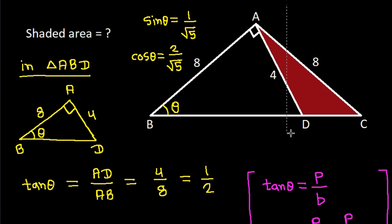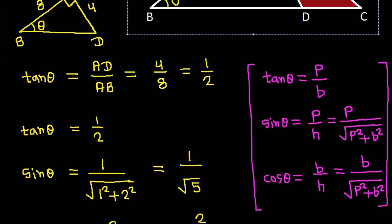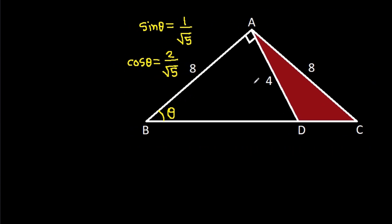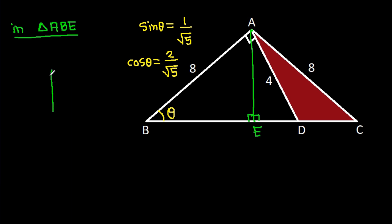Now from point A, if we make a perpendicular on BC, suppose this point is E. Then in triangle ABE, this angle is 90 degrees and this angle is theta.